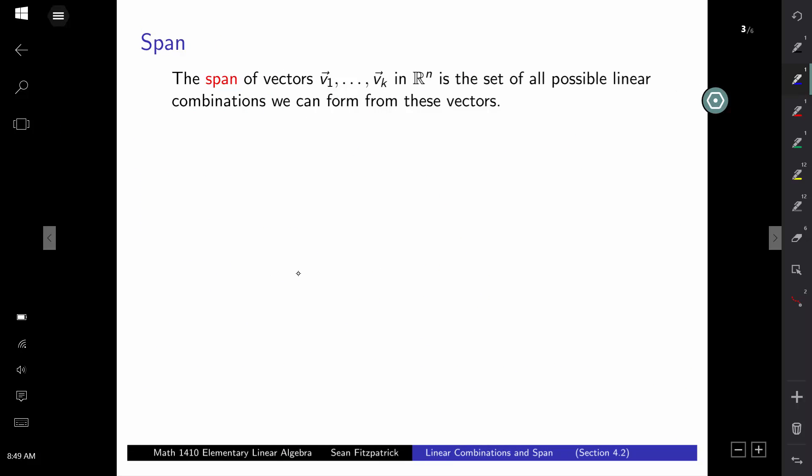So once you understand what linear combinations are, you can sort of consider linear combinations in the abstract, and you can say, well, what if instead of just considering one set of numbers to form a single linear combination, what if I consider all possible choices for those c's? I consider all possible choices for my scalars. I consider all possible linear combinations. This is what the span is.